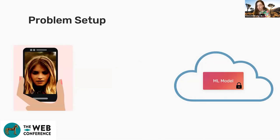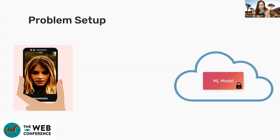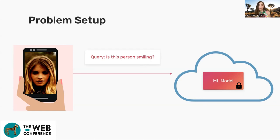The problem setup we focus on is: let's assume you've taken a picture, maybe on your phone or an edge device in your home — a resource-constrained device. You want to send this image to a deployed deep learning model on a service provider. Maybe you want to do a simple task like smile detection, apply a filter, or make yourself look old. You send your picture to this cloud that you don't really trust, and you ask the query: is this person smiling? Then you get a response back.